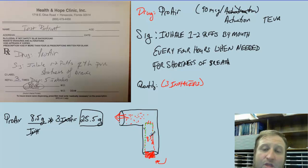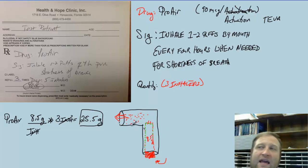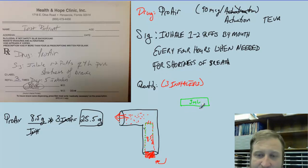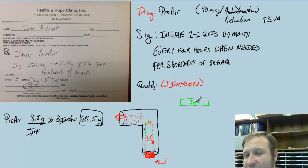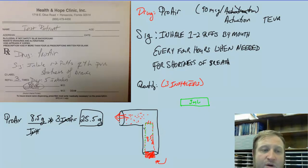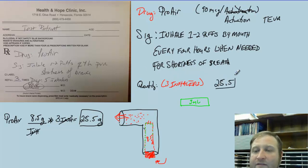Each inhaler has a cartridge that contains 8.5 grams. So we will get three of these, which is 8.5 times 3. Compared to an insulin pen — a Lantus pen always has 3 mLs and they'll never break that up — each inhaler contains 8.5 grams. So the quantity that we will input into our EMR is going to be a value of 25.5.